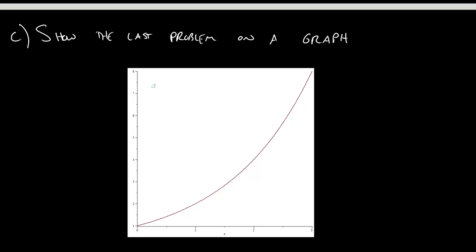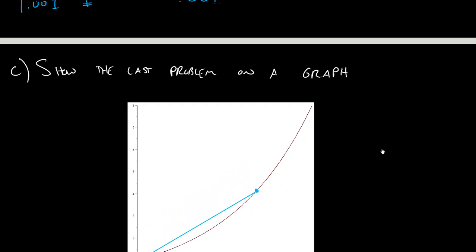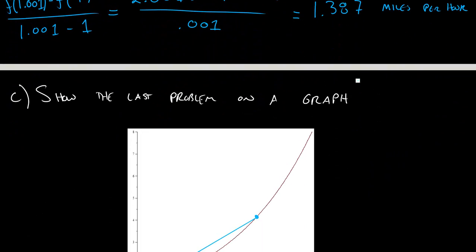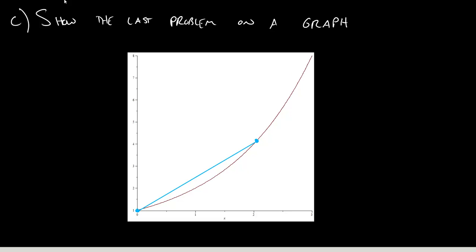Graphically, what this is, is we look at the point 0 and we look at the point 2 and we draw a line in between these two points. And so that number I calculated for A, 3 halves, that tells me that the slope of that thing I just drew here was 3 halves. So the slope is equal to 3 halves.